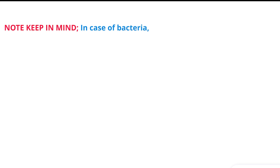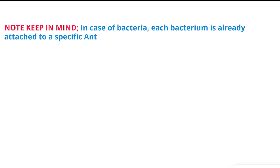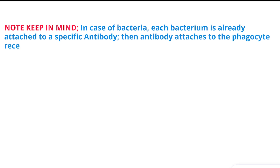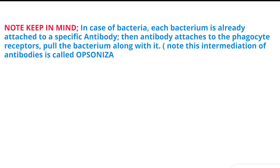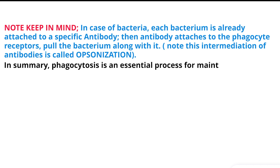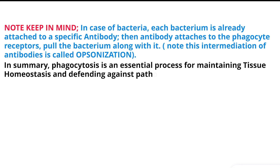Note: In the case of bacteria, each bacterium is already attached to a specific antibody. The antibody then attaches to the phagocyte receptors, pulling the bacterium along with it. This intermediation of antibodies is called opsonization. In summary, phagocytosis is an essential process for maintaining tissue homeostasis and defending against pathogens.